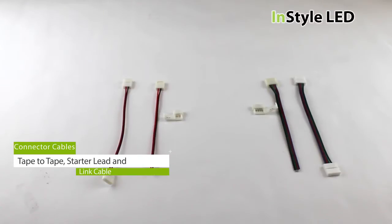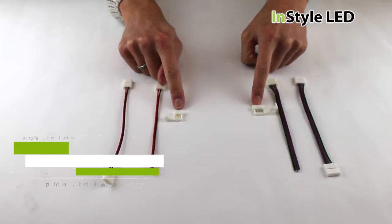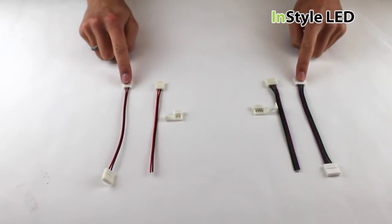There are three types of solderless connectors for the LED tape: the tape to tape connector, the tape to lead connector, and finally the flexible corner connector.